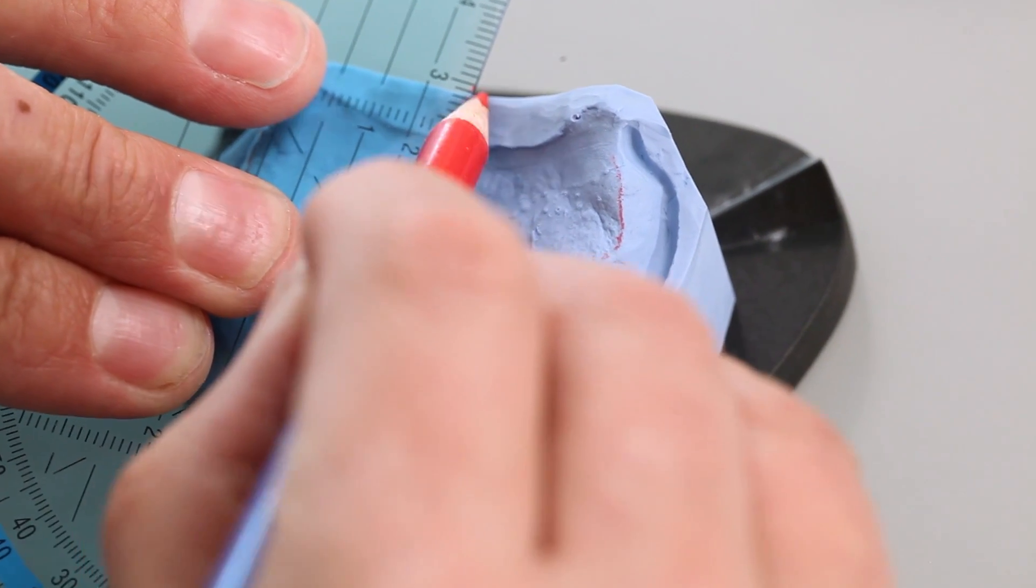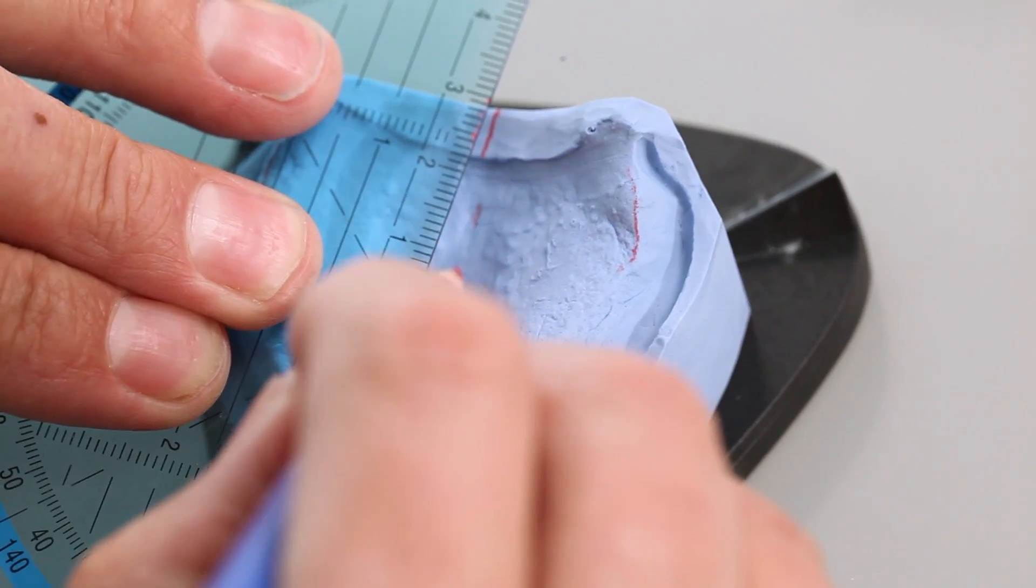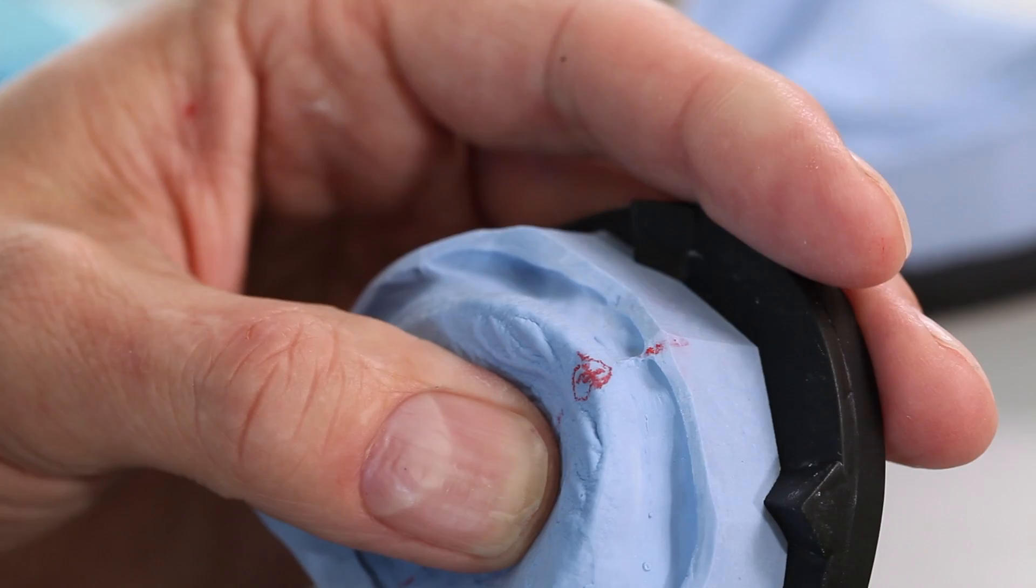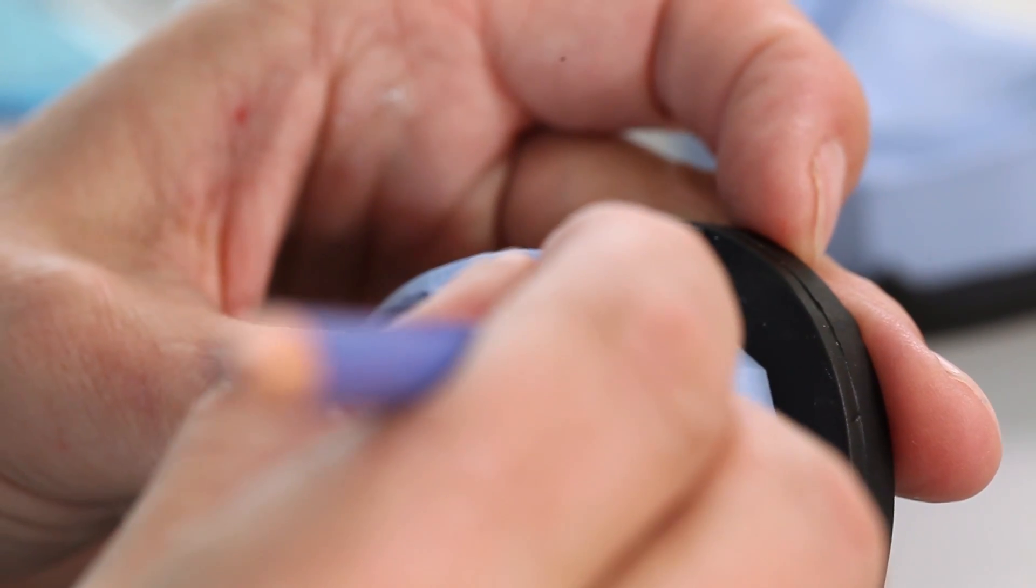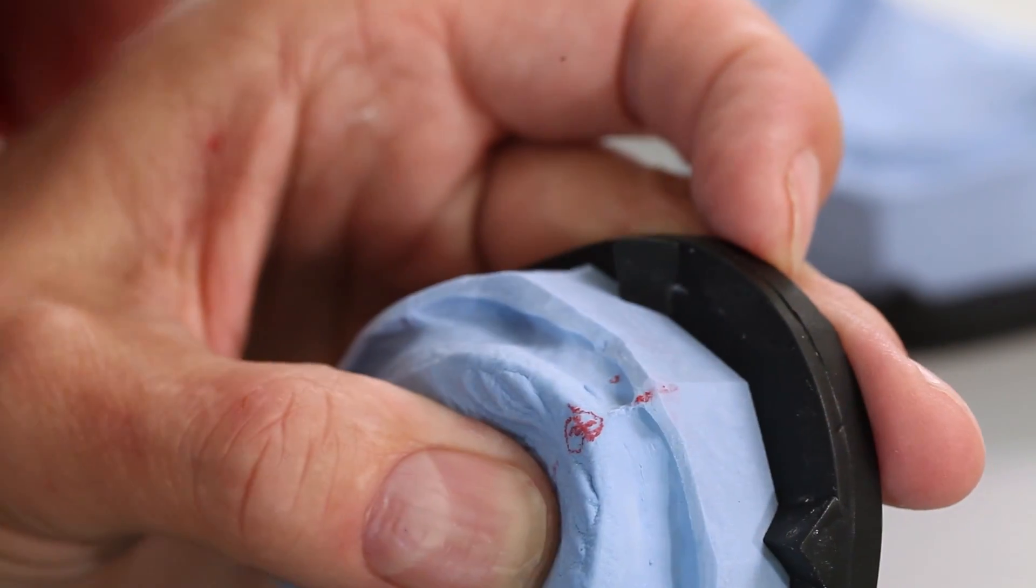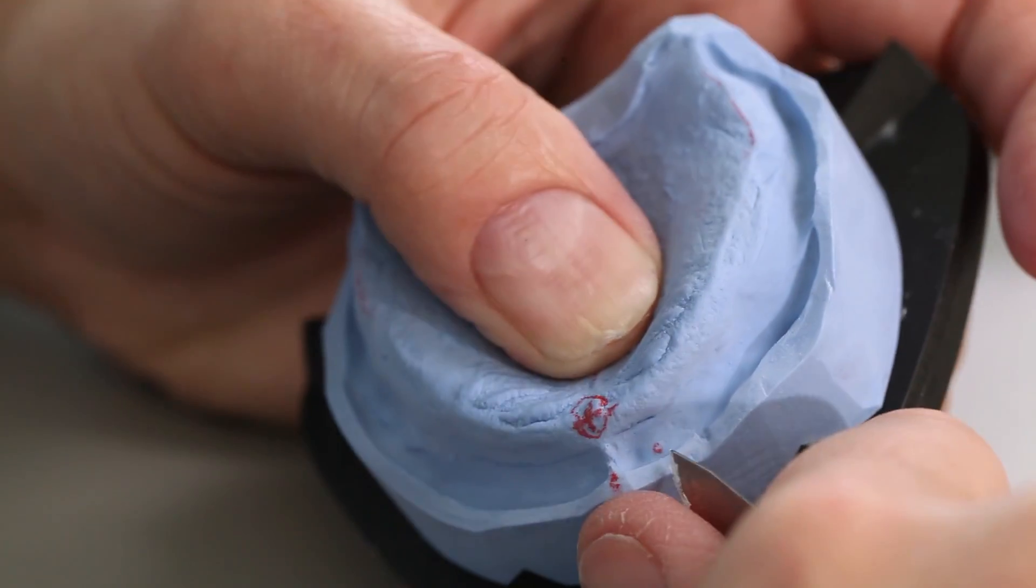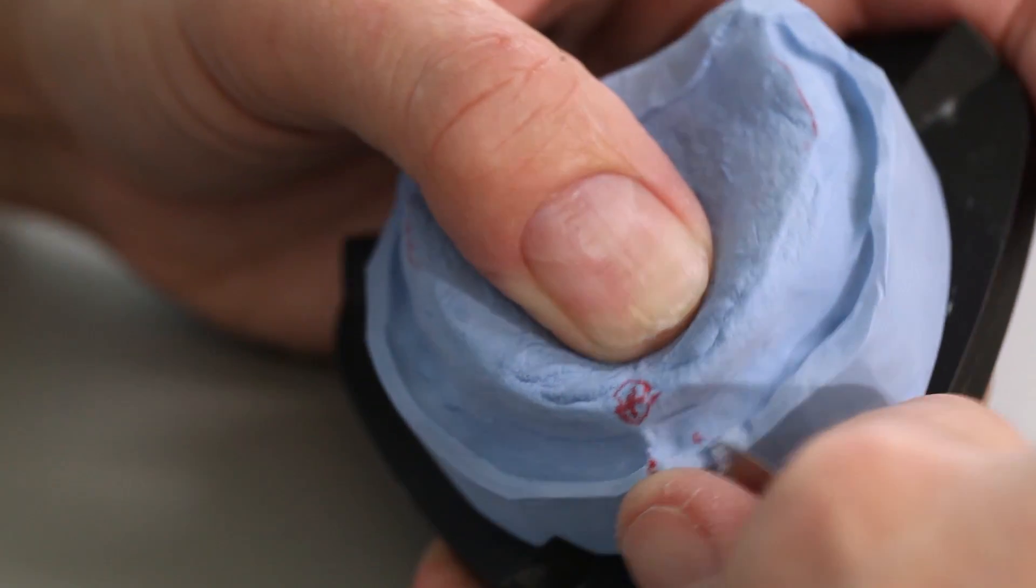Extend the midline to the edge of the model. Mark the lowest point of the vestibulum. It is situated approximately 5mm away from the labial phenom. Expose the vestibulum.